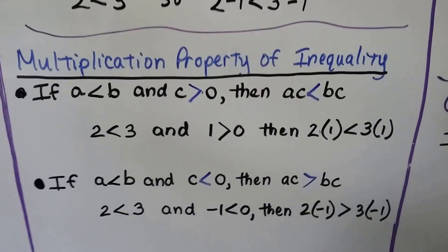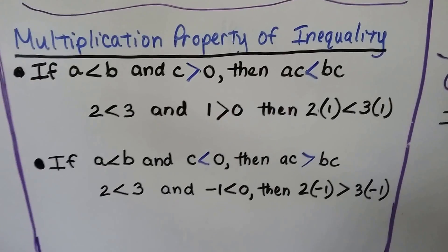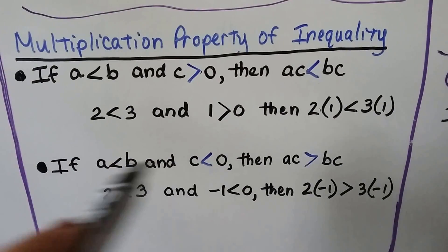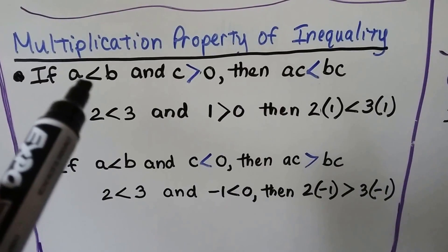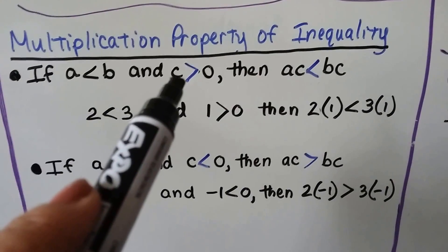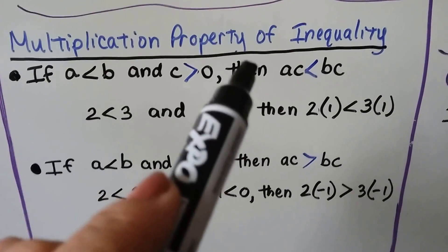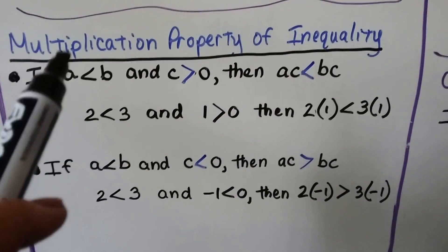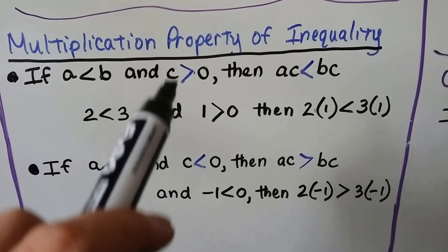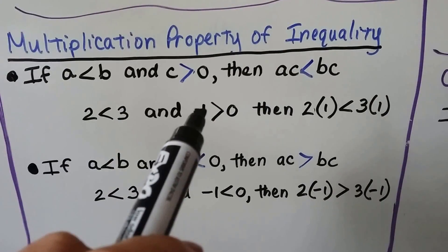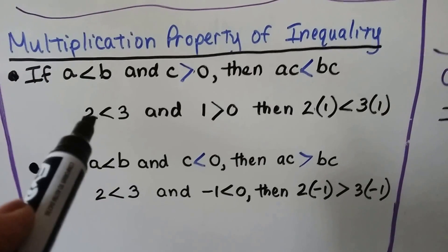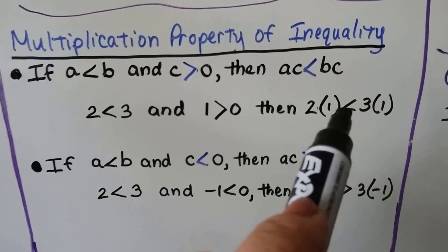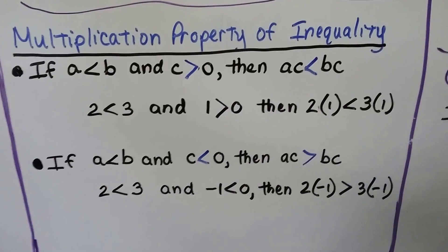We have a couple of versions of the multiplication property of inequality, and notice the signs are going to switch in one of them. If a is less than b and c is greater than 0, then a × c is less than b × c. With a = 2, b = 3, and c = 1, since 2 is less than 3 and 1 is greater than 0, then 2 × 1 is less than 3 × 1.